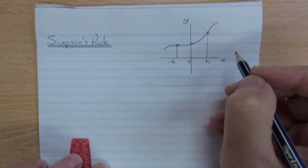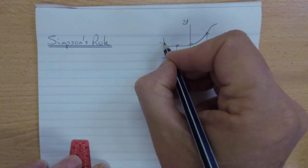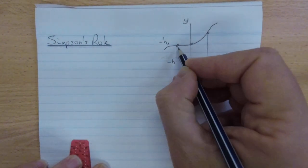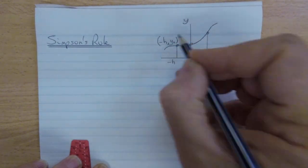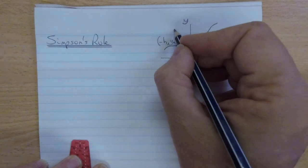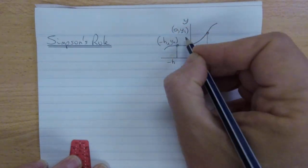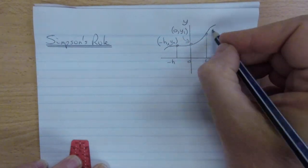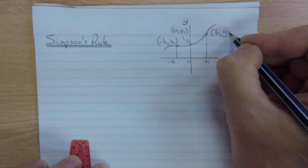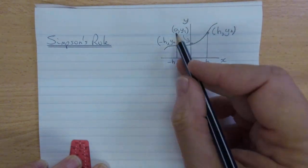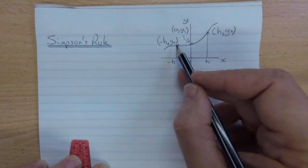It's important that the width of these segments is equal. So this point would have coordinate negative h, and I'll call the y value of this one y0. The point in the middle here would be 0 and y1. And this point over here would be positive h for x, and I'll call that y2. So these are our three points of interest, and I'm going to be modeling that short segment there with a parabola.